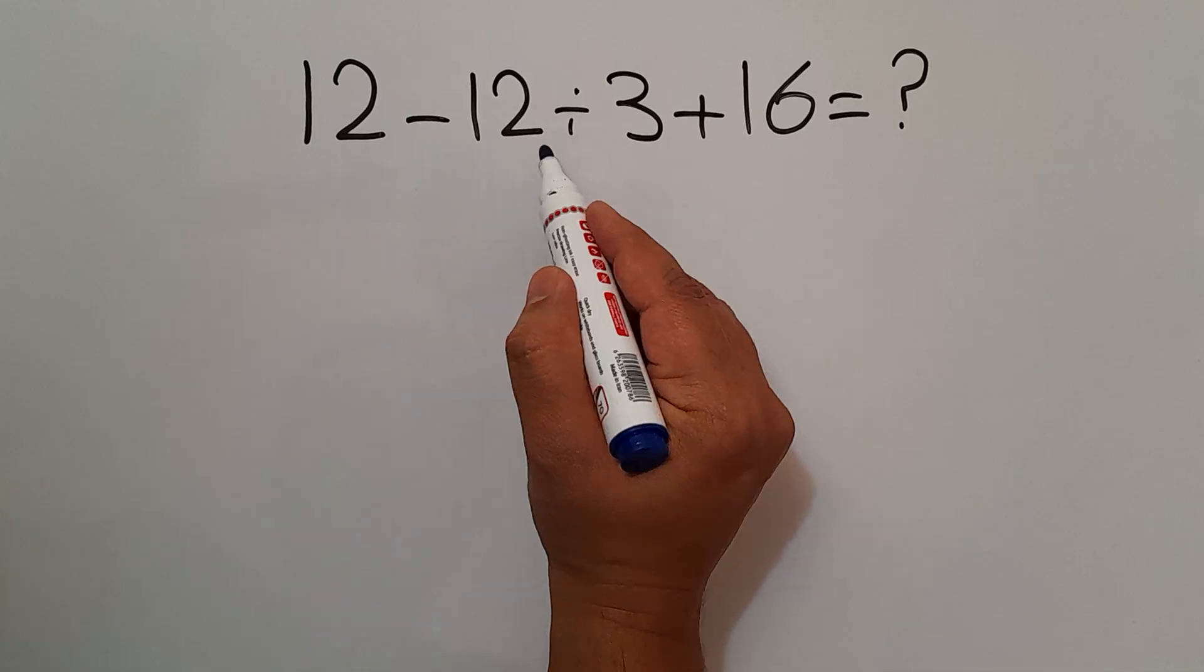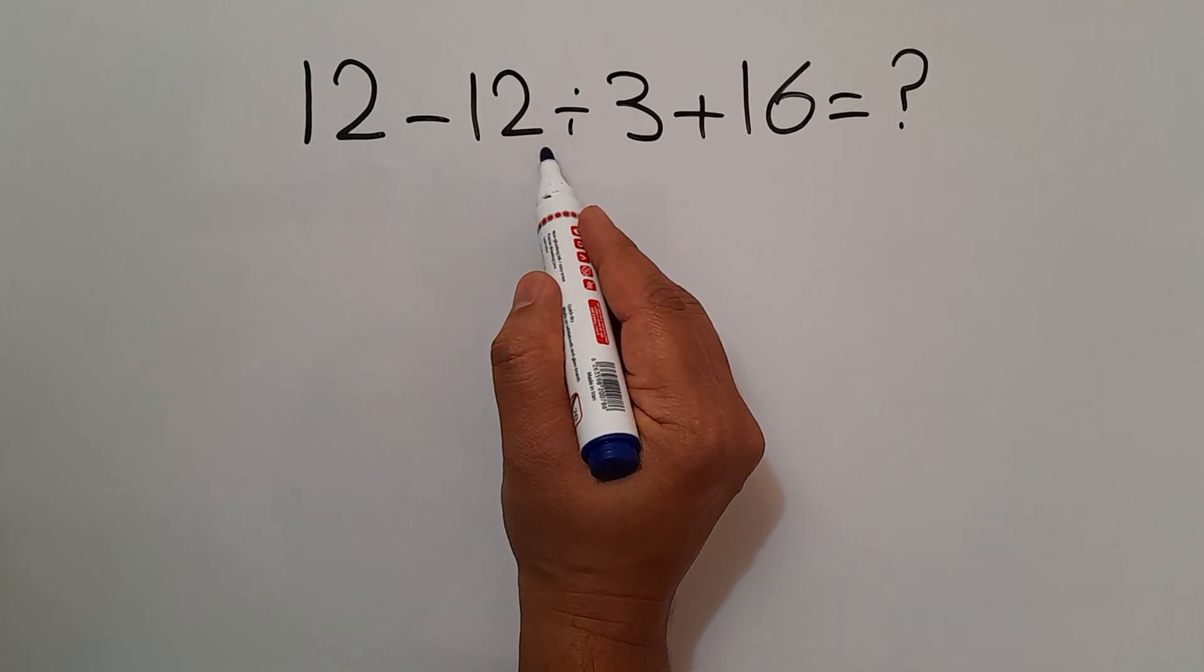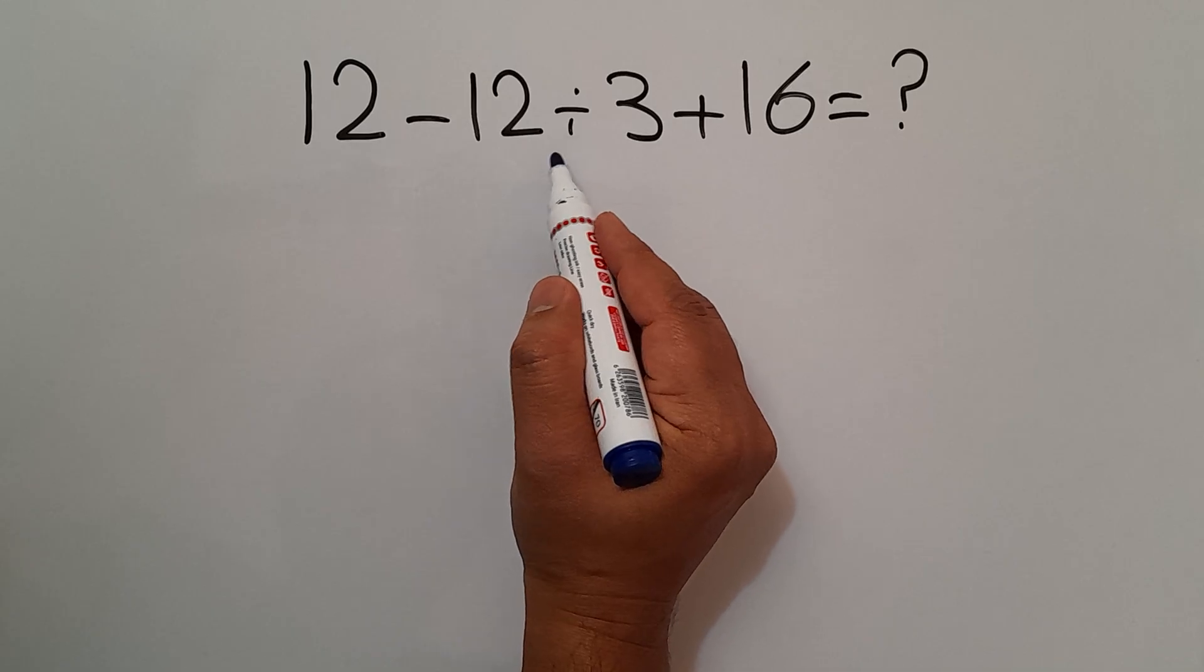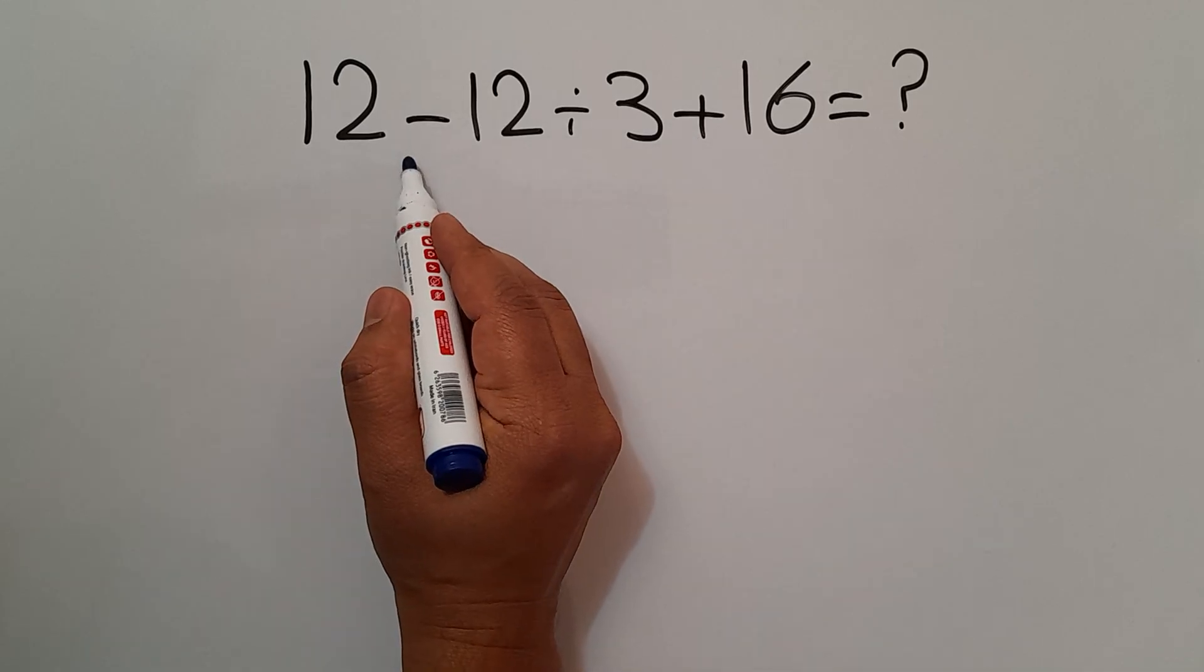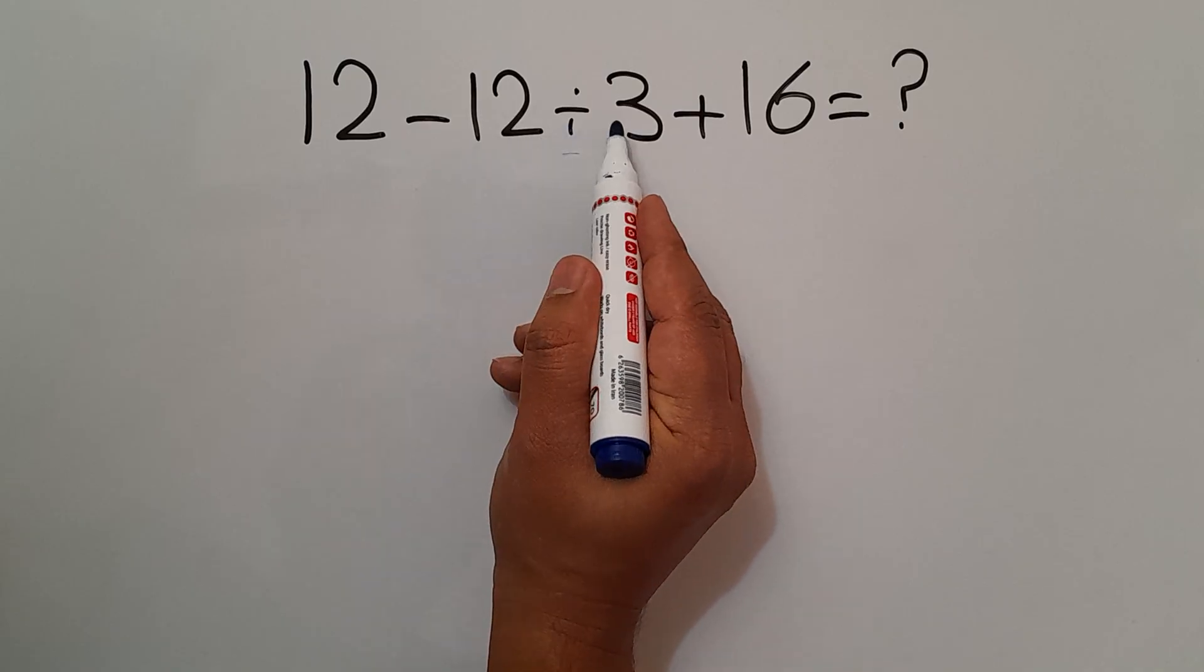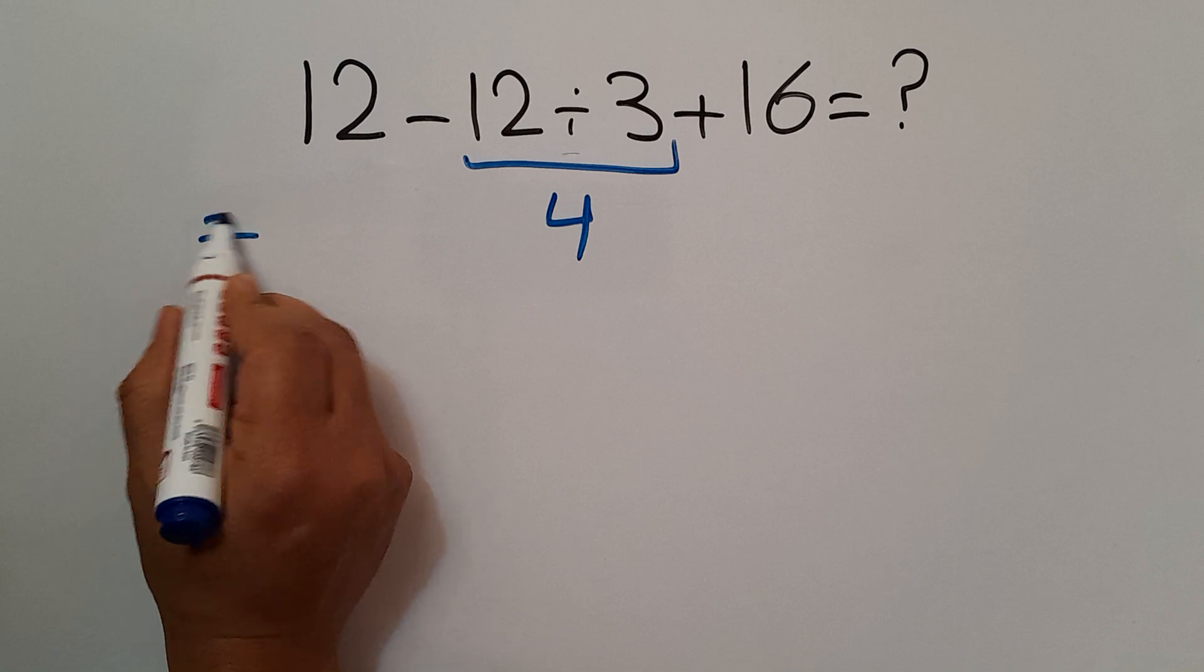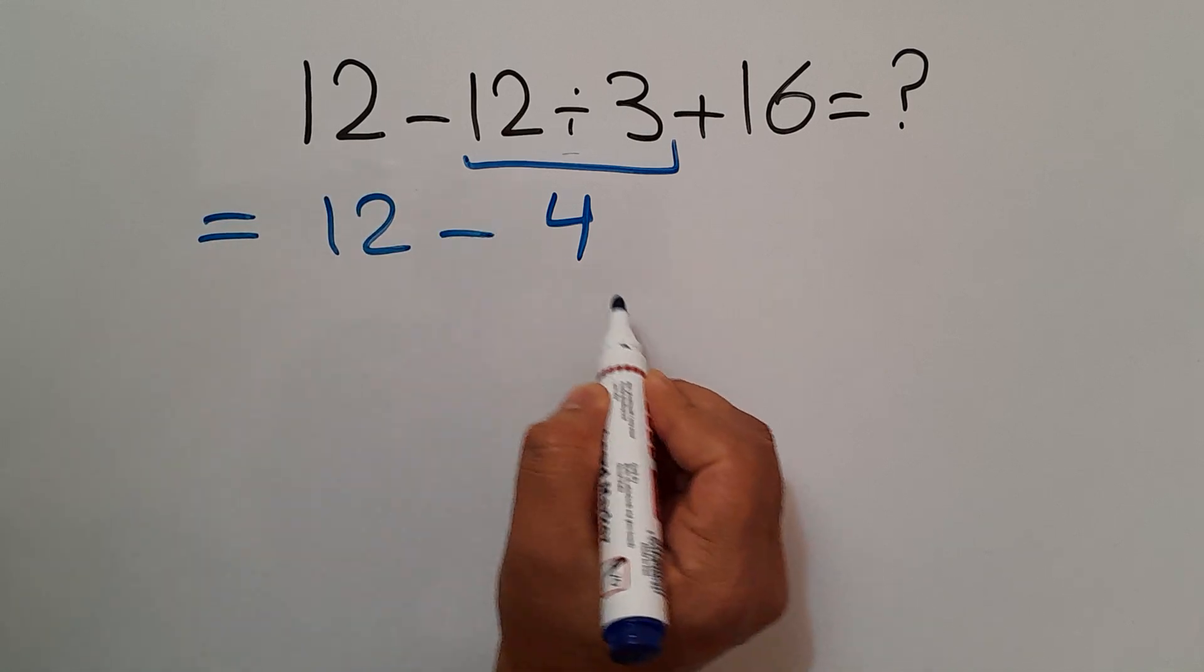As we know, division has higher priority than addition and subtraction, so first we do this division. 12 divided by 3 gives us 4, so we have 12 minus 4 plus 16.